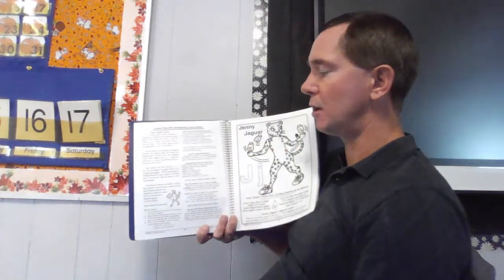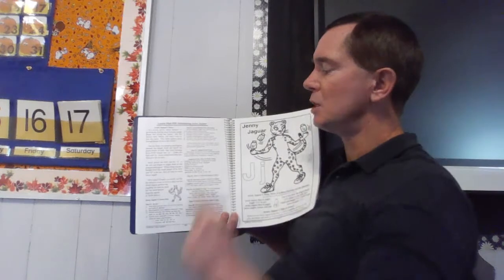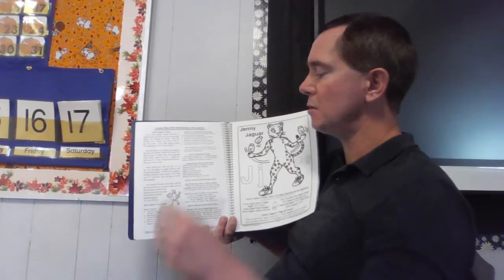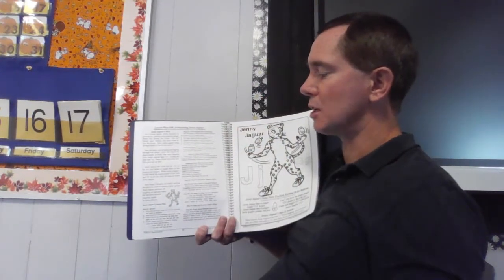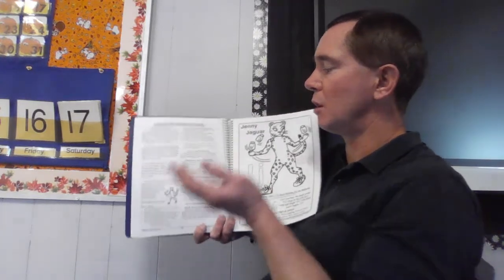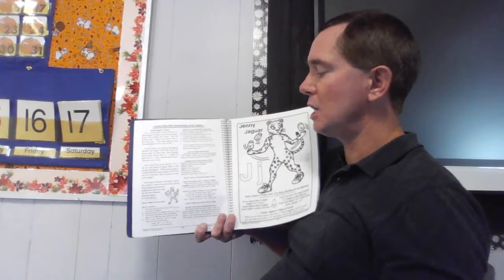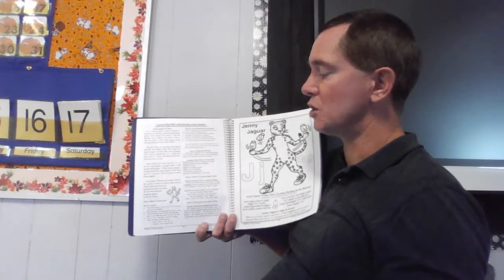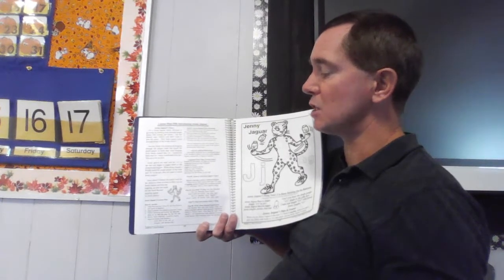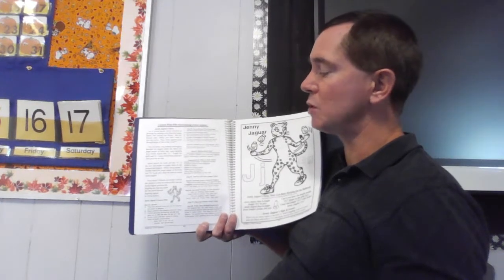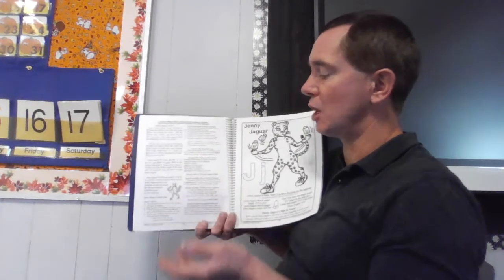This gave her an idea. Jenny placed the bells and the J's in the jars and began to juggle as she jumped and jogged. When Jenny Jaguar's friends heard the jingle jangle of bells and J's in the jars, they all came to watch Jenny juggle.